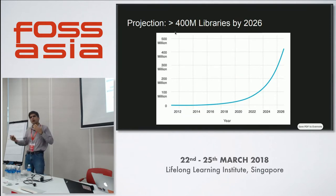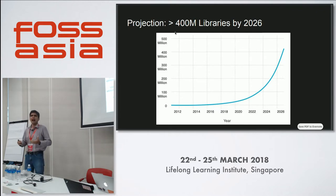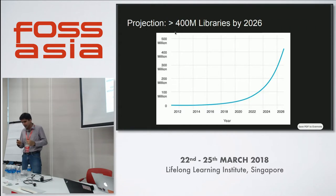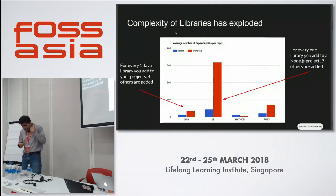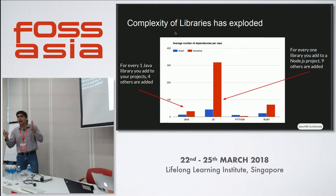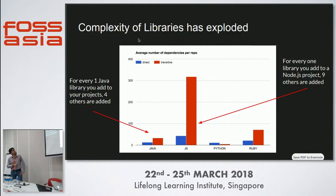While that extrapolation is a bit tongue-in-cheek, ecosystems like npm have libraries for things like 'is-positive' and 'is-negative', illustrating the sheer number of components available. The point is that developers have a huge number of components to choose from when assembling applications. Looking at data aggregated from SourceClear customer scans, a typical Java application today will pull in four other libraries indirectly for every one library you add directly.